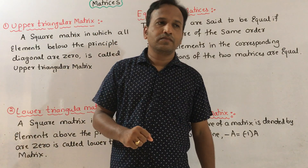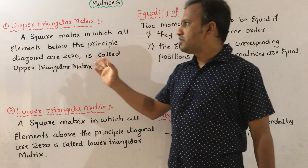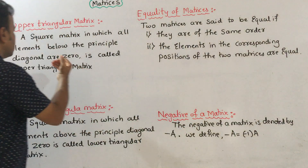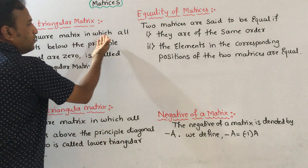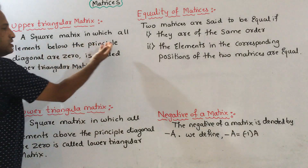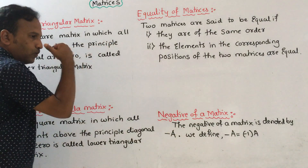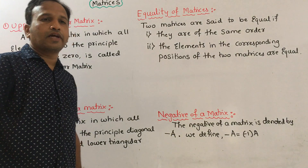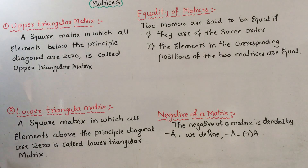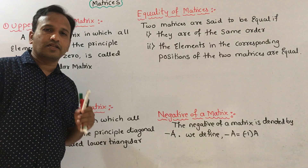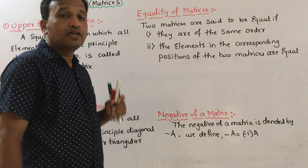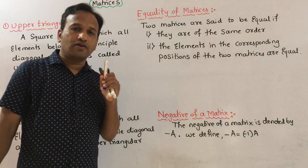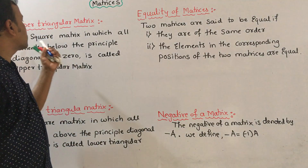Hello everyone. Remaining definitions. First one: upper triangular matrix. A square matrix in which all elements below the principal diagonal are zero is called an upper triangular matrix. In a square matrix, the number of rows and number of columns are equal.